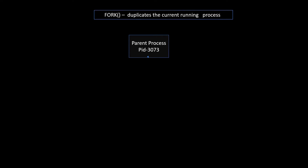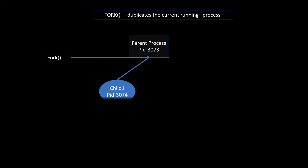Welcome to another lecture. In this lecture we are going to discuss about fork system calls. The fork system call always duplicates the current running process. In this case we are taking the parent process as the current running process, and when you use fork on the parent process it will duplicate itself. The original remains the parent process.